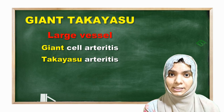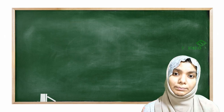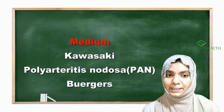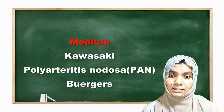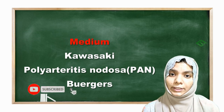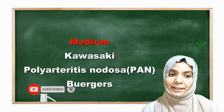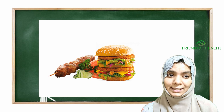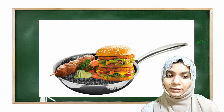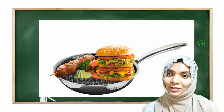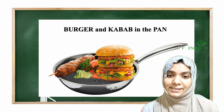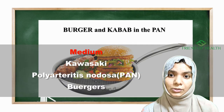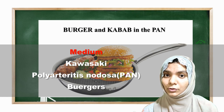For medium vessel vasculitis, we have Kawasaki disease, polyarteritis nodosa, and Buerger's disease. The mnemonic: imagine a medium-sized pan with a burger and a kebab — pan, burger, kebab. So pan stands for polyarteritis nodosa, burger stands for Buerger's disease, and Kawasaki completes the medium vessel group.